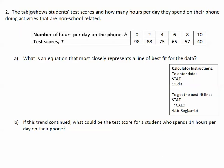Number two: the table shows students' test scores and how many hours per day they spend on their phone doing activities that are non-school related. The number of hours per day on the phone is called H, and their test scores are called T. For a student who spends approximately two hours per day on the phone, they earn approximately an 88 on their test score. What is an equation that most closely represents a line of best fit for the data?